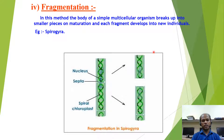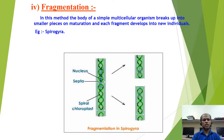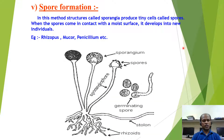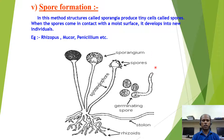Fragmentation takes place in Spirogyra, which is a thread-like algae. Its body simply breaks into many smaller pieces, and on maturation these fragments develop into new individuals. Next is spore formation, which mostly takes place in fungi such as Rhizopus, Mucor, and Penicillium. These fungi have sporangia containing many tiny cells called spores. When these spores come in contact with a moist surface, they develop into new individuals.